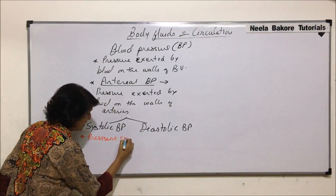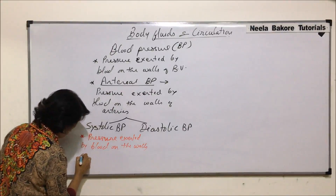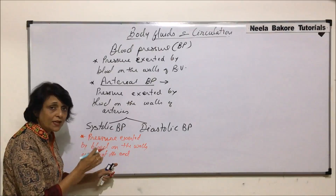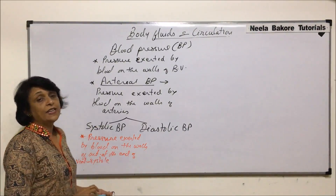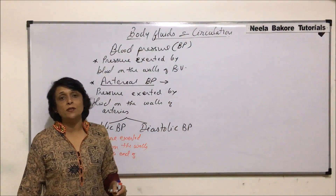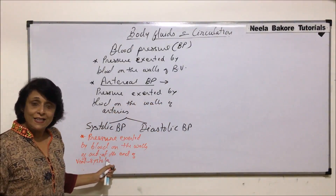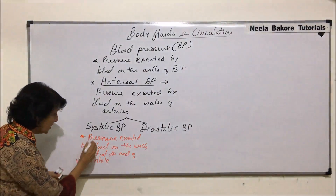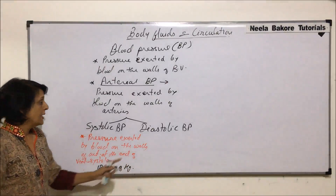Systolic pressure is the pressure exerted by blood on the walls of arteries at the completion of ventricular systole. These pressures are measured indirectly using an instrument commonly known as a BP instrument, or sphygmomanometer. The pressure is measured in millimeters of mercury. In a normal healthy adult, the systolic pressure is 120 millimeters of mercury.